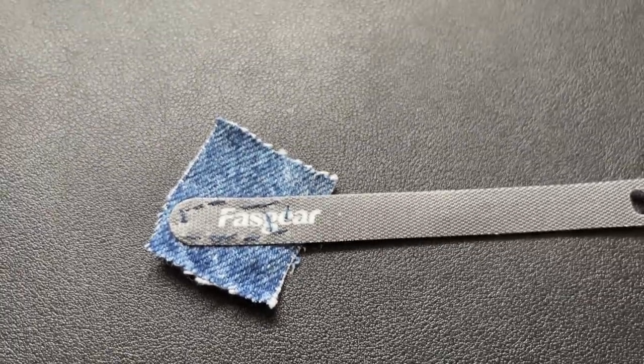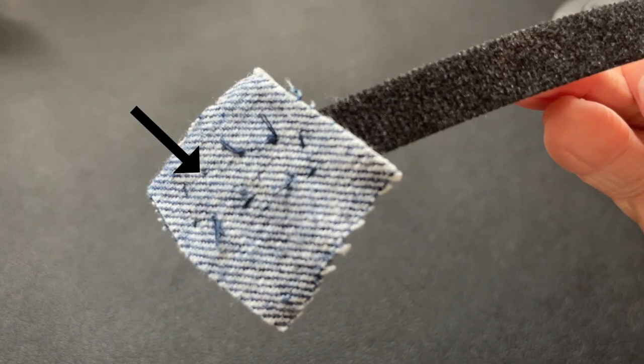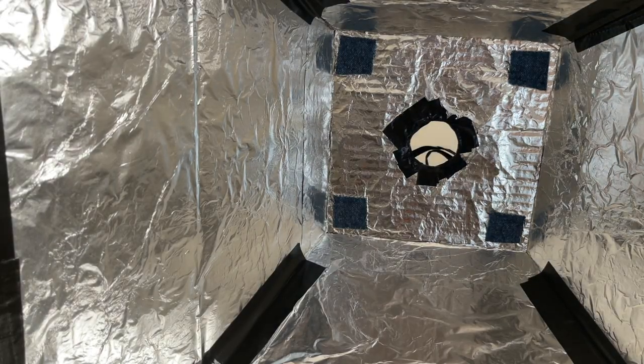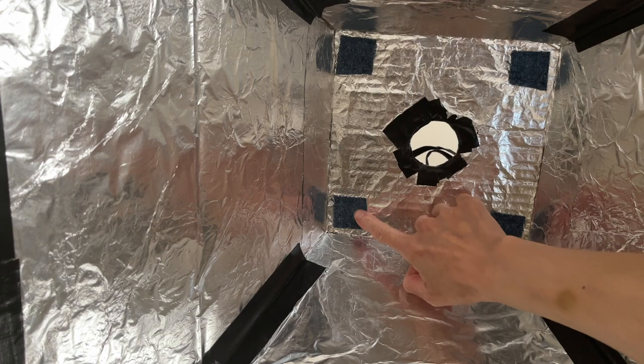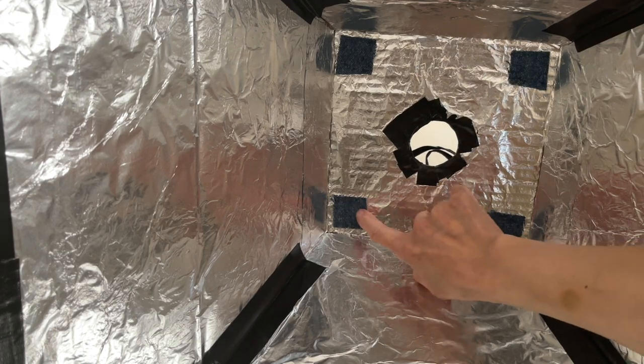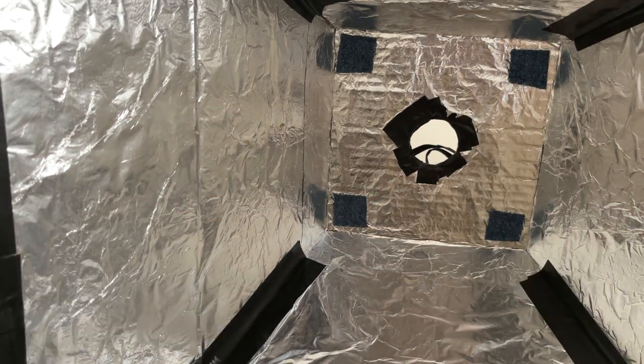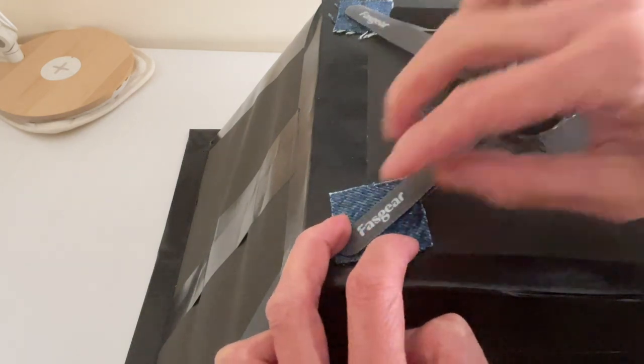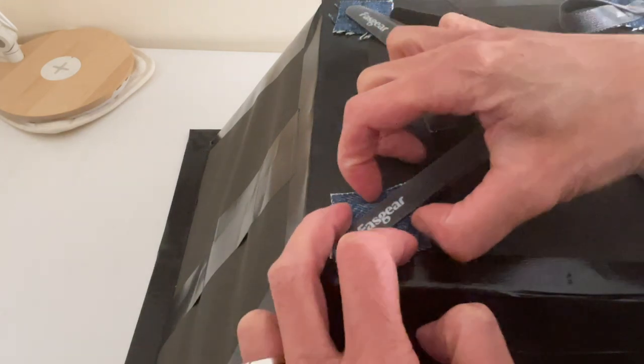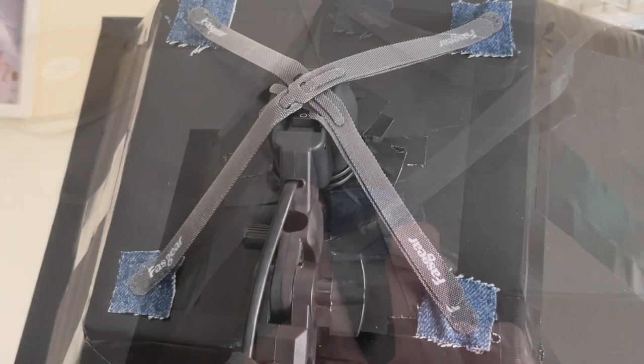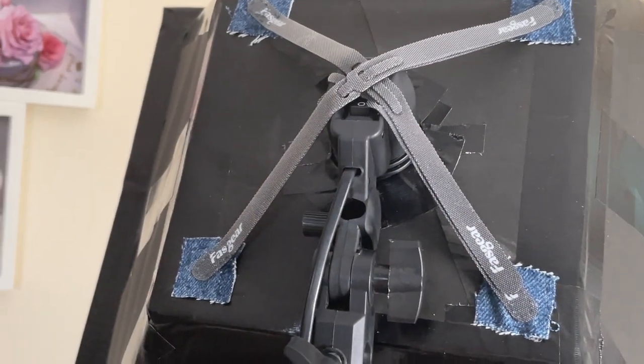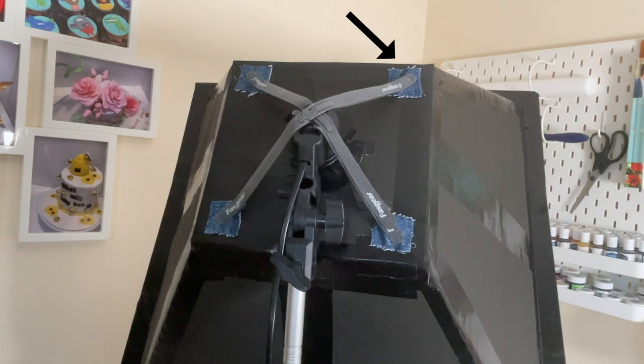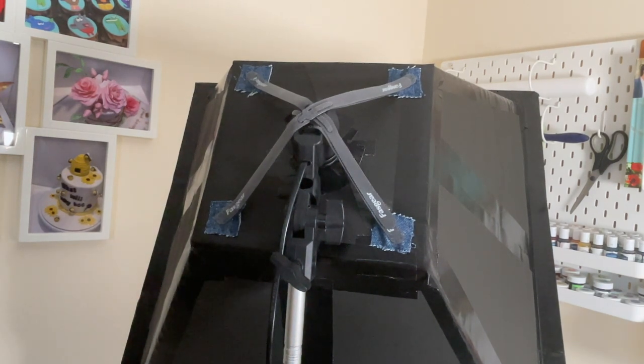Then take one of the remaining denim squares and secure it temporarily on the inside of the softbox. I used some double-sided tape. Then line it up with the denim piece with velcro on the outside of the box. Then sew through the box to secure the two patches of denim together and make a firm base. Repeat this in each corner as I have shown.